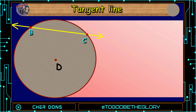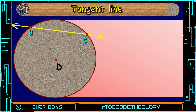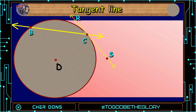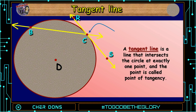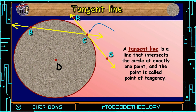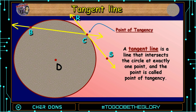We have here a secant. Then I will draw another line — let us connect point R and point S. As you can see, the line intersects our circle at point C. This line is called a tangent line. A tangent line is a line that intersects the circle at exactly one point, and that point is called the point of tangency.